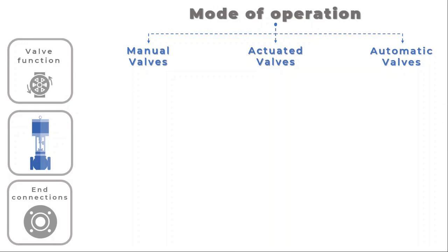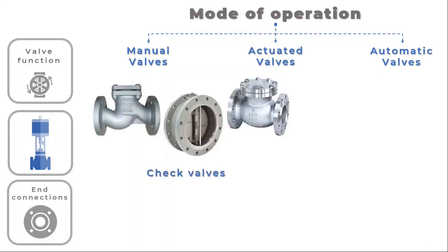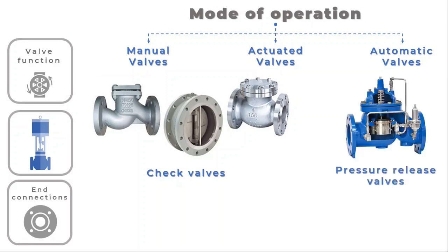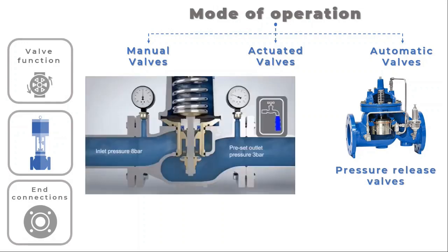For automatic valves, when a certain flow condition is satisfied, some valves automatically open. Check valves, for instance, automatically close in the event of backflow. Similarly, pressure release valves are activated automatically when an overpressure condition is detected.